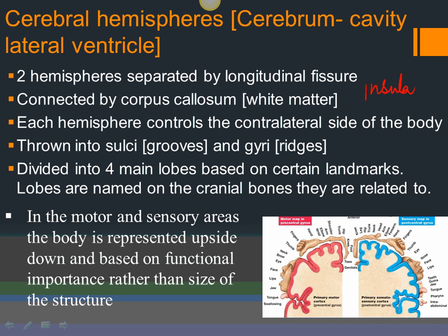An important feature of the cerebral hemispheres is that the body is represented in an upside-down fashion. If you look at the motor area of one hemisphere from the side, you'd expect the body represented straight, with the head at top and legs below, but it's actually inverted — the head is at the bottom and the legs go upward. So if this area was damaged, muscles of the head would be affected; if that area, muscles of the thigh.